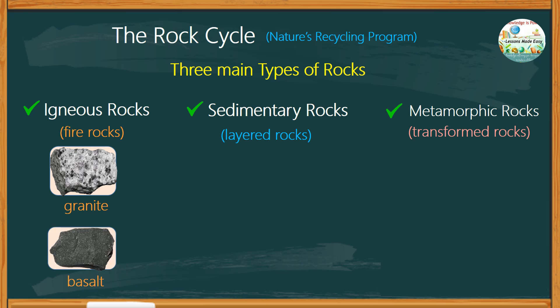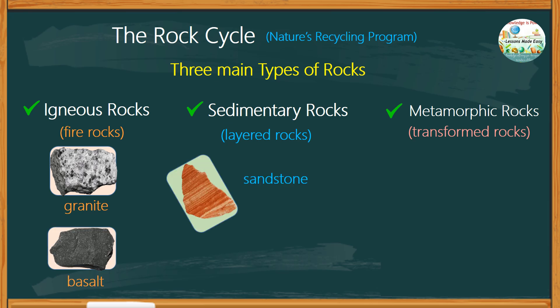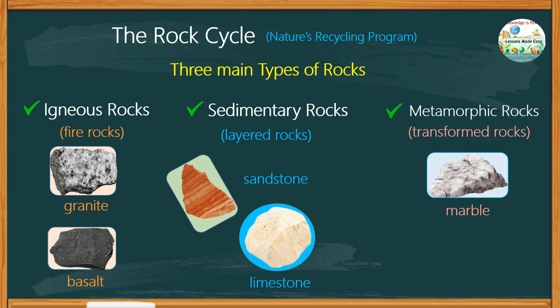Granite and basalt are the common types of igneous rocks. Sandstone and limestone are examples of sedimentary rocks. Marble and slate are examples of metamorphic rocks.